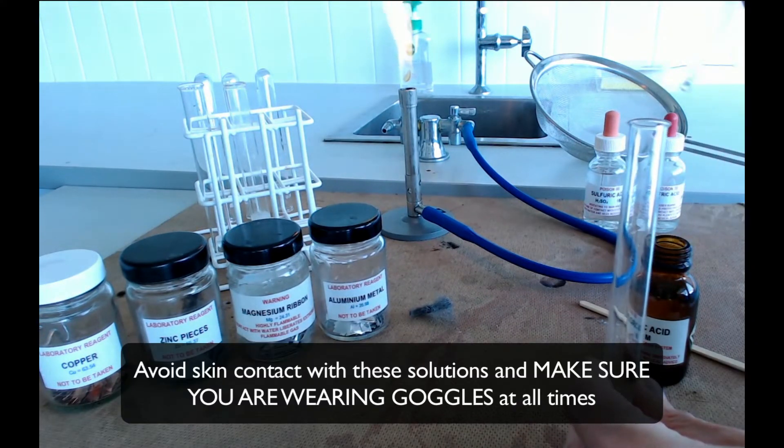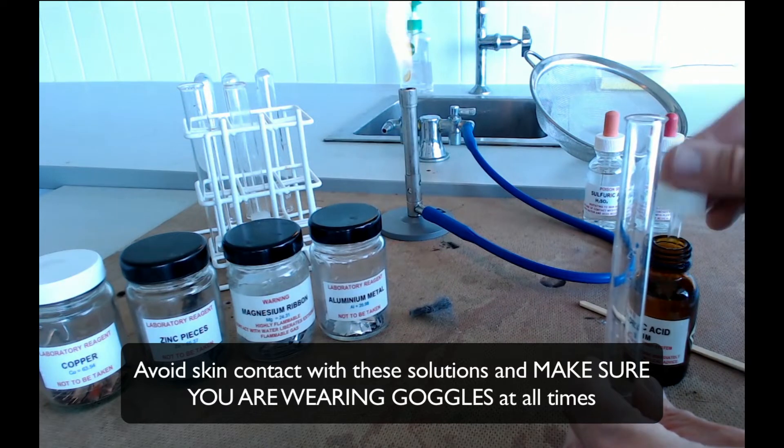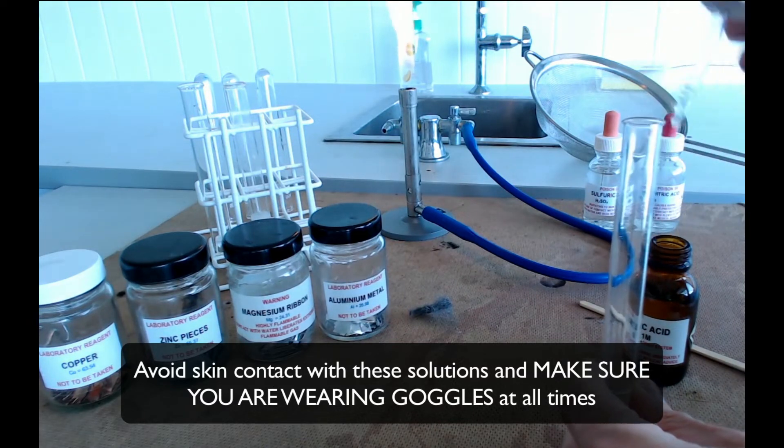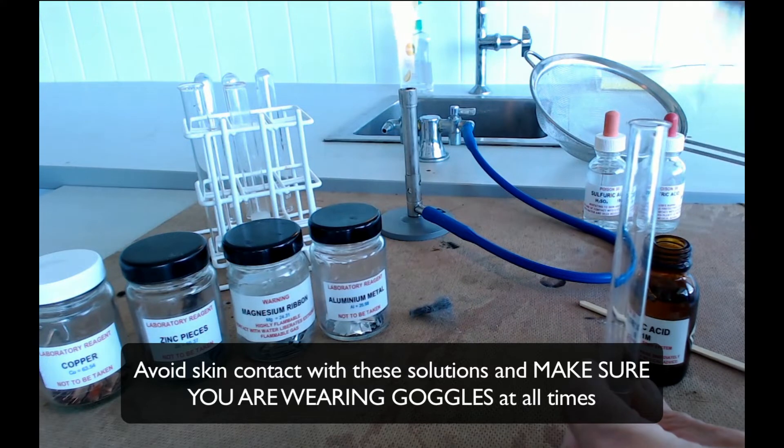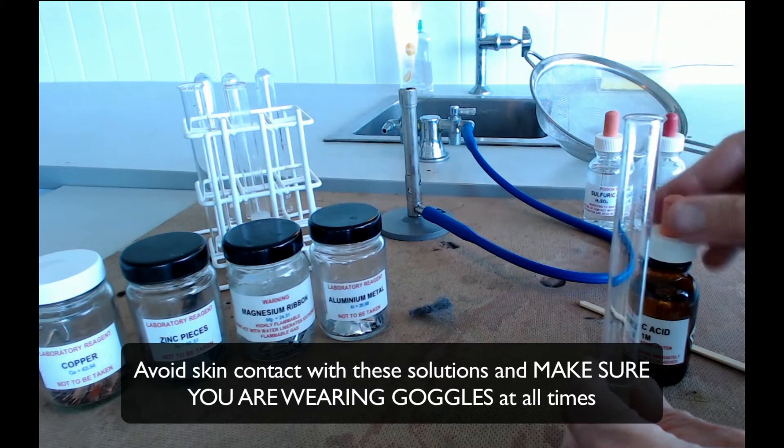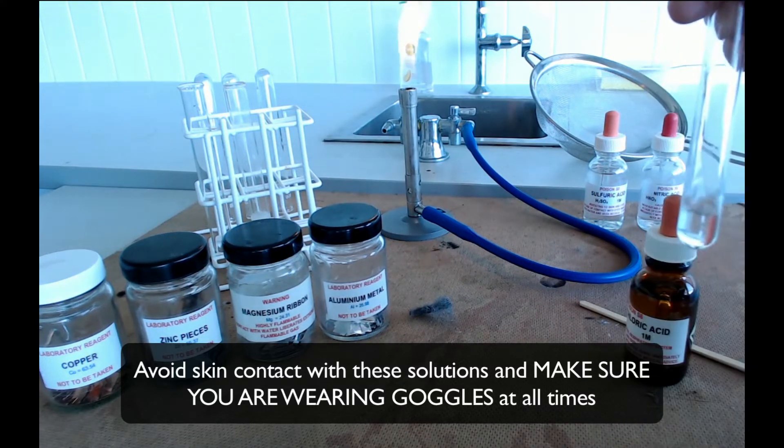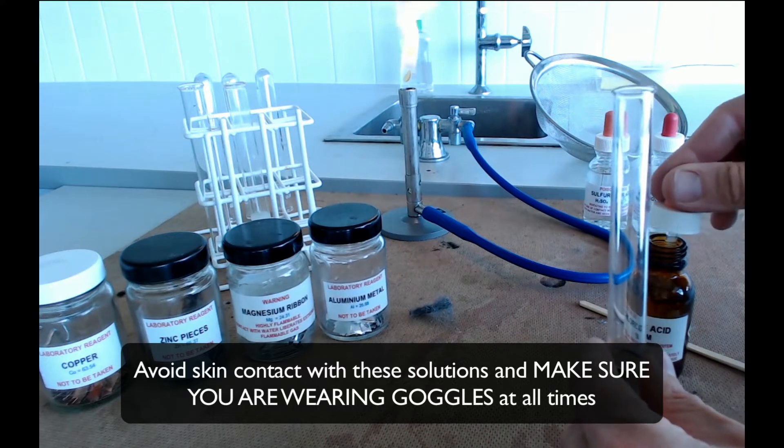So a good guide to how much to take would be once you've got about a two finger depth inside your test tube. So if what you've got in your test tube is about two fingers deep then you've got enough acid.